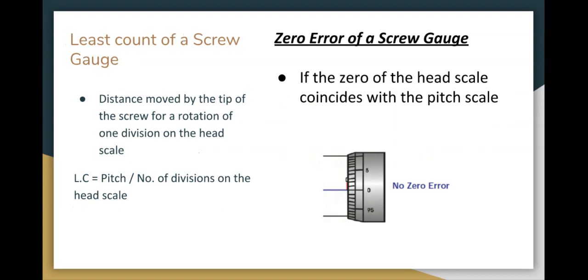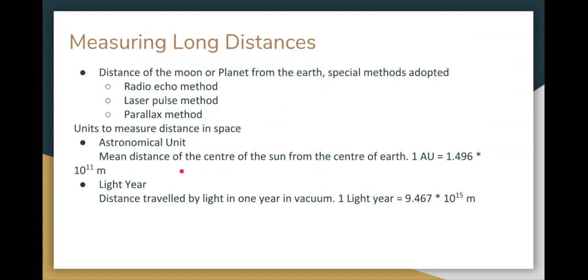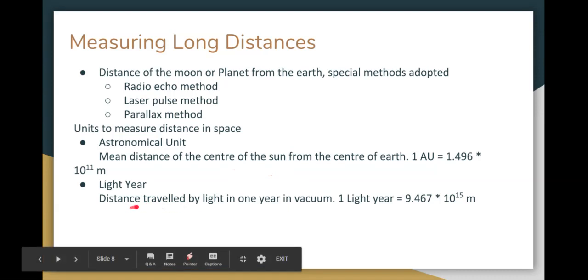Third statement, we can study in 11th standard physics. Astronomical unit is the mean distance of the center of the sun from the center of the earth. The distance from the center of the sun, the average distance, that is the astronomical unit. So one astronomical unit is 1.496 into 10 to the power of 11 meters. Next, light year. Light year is the unit of distance. So one light year is equal to 9.467 into 10 to the power of 15 meters.